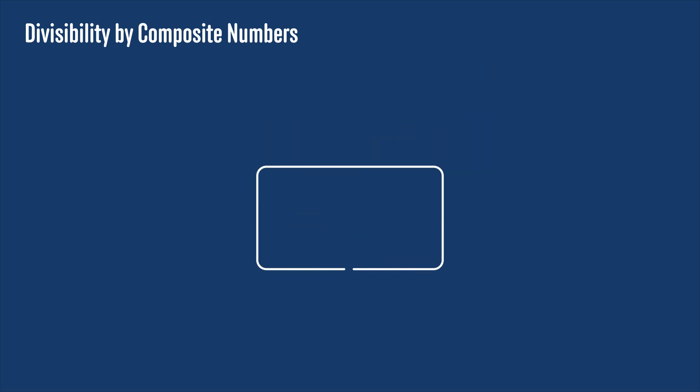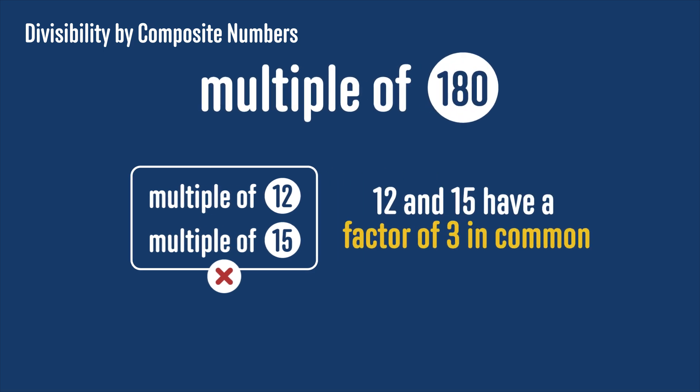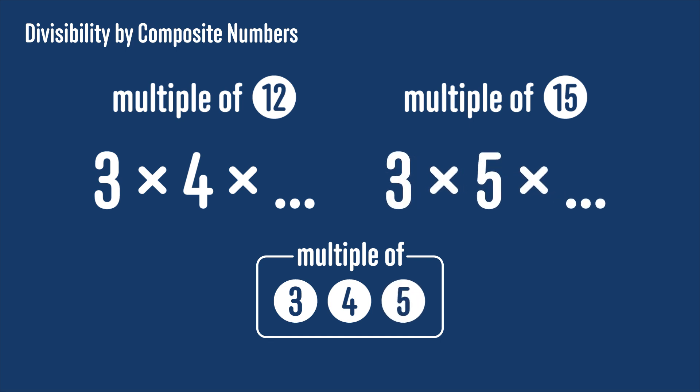Similarly, if we know that a number is a multiple of 12 and a multiple of 15, we can't say that the number is a multiple of 12 times 15, or 180, because 12 and 15 have a factor of 3 in common. So if you tell me that a number is a multiple of 12, then we know it's 3 times 4 times something, but if you also tell me it's a multiple of 15, then we know that it's 3 times 5 times something, but we already knew it was 3 times something, so we just know it's also a multiple of 5. So overall, we can only tell that it's a multiple of 3 times 4 times 5, or a multiple of 60.